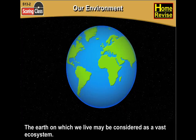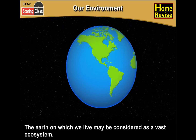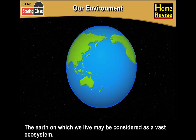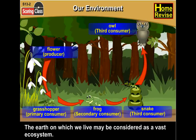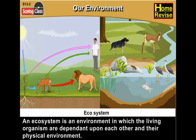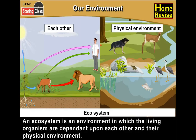The earth on which we live may be considered as a vast ecosystem. An ecosystem is an environment in which the living organisms are dependent upon each other and their physical environment.